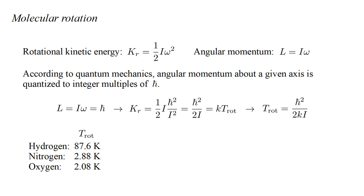Calculating the actual moments and rotational temperatures, we find temperatures of 87.6, 2.88, and 2.08 Kelvin for hydrogen, nitrogen, and oxygen. The hydrogen value is about 30 times the nitrogen value and about 40 times the oxygen value.